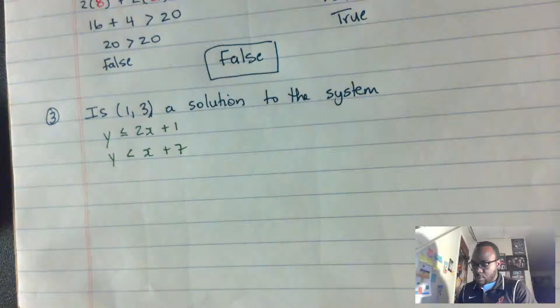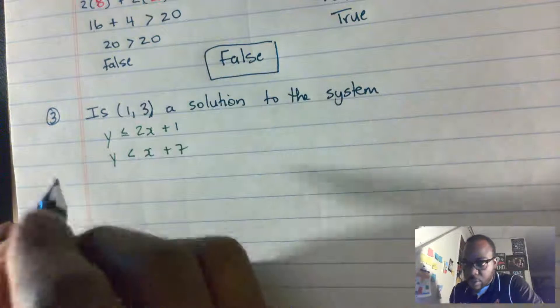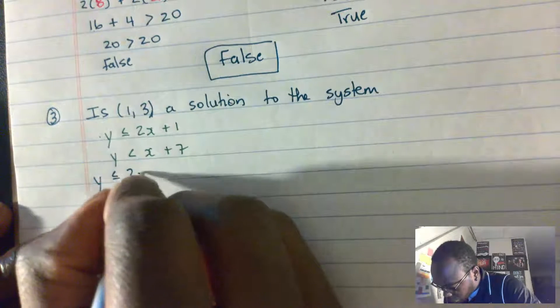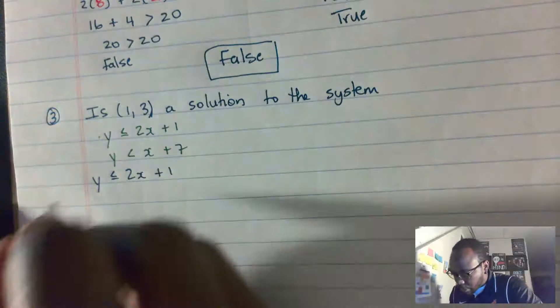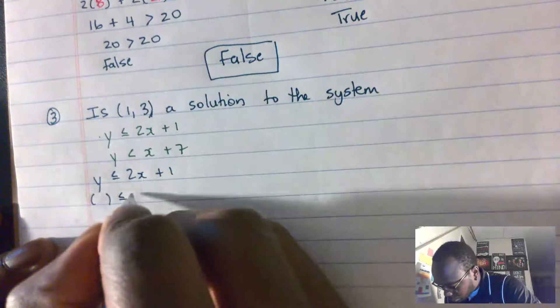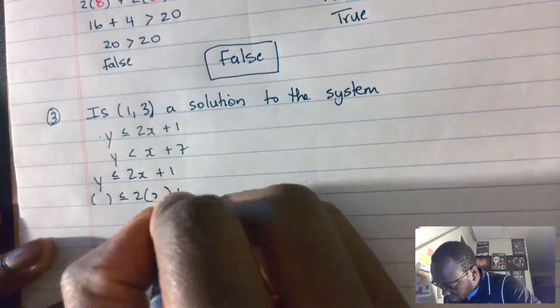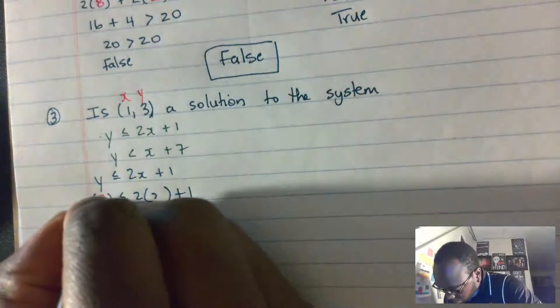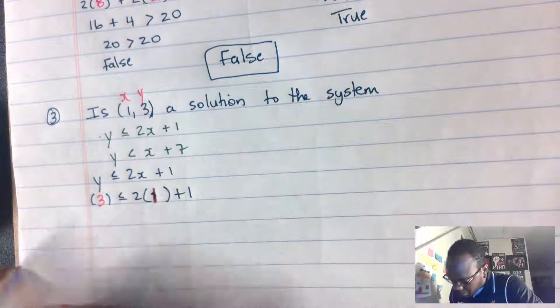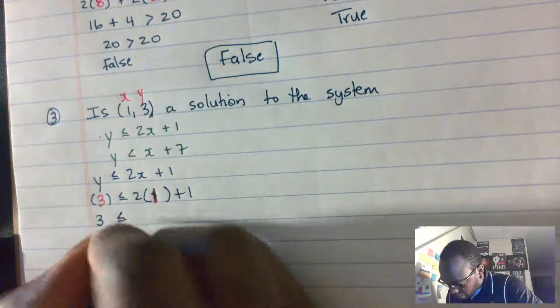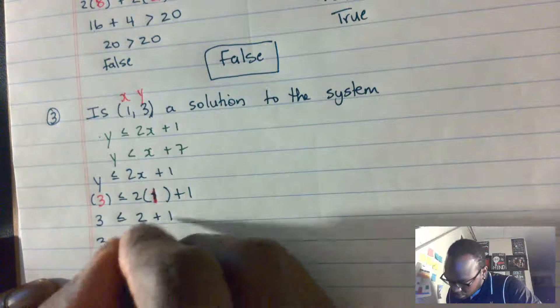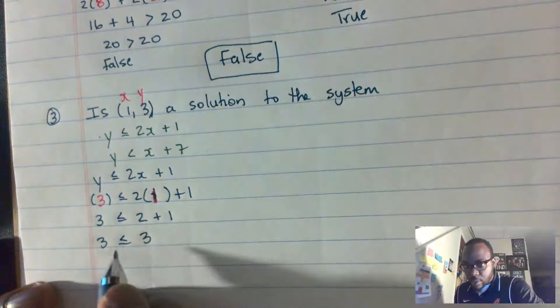Let's look at a third example: is (1,3) a solution to the system? Rewriting the first inequality, y ≤ 2x + 1: whatever y is, is less than or equal to 2 times x plus 1. We know x is 1 and y is 3. So we have 3 ≤ 2 times 1 plus 1, which is 3 ≤ 3. Since 3 equals 3, this is true.